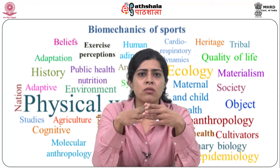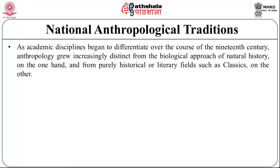After discussing the history, let's talk about the national anthropological traditions. As academic disciplines began to differentiate over the course of the 19th century, anthropology grew increasingly distinct from the biological approach of natural history on one hand, and from purely historical or literary fields such as classics on the other. Museums such as the British Museum were not the only site of anthropological studies during the new imperialism period. Starting in the 1870s, zoos became unintended laboratories, especially the so-called ethnological exhibitions or 'negro villages,' where people from the colonies were displayed in what has been called human zoos.